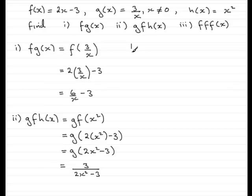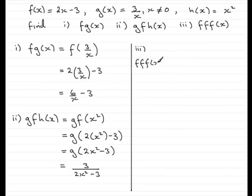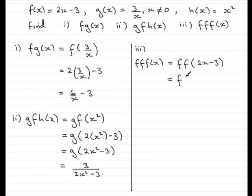In my last example, I chose this to demonstrate a repeating function: fff of x. We have ff of f of x, which is 2x minus 3. I need to find f of f of x, being f of 2x minus 3. So I replace any x with 2x minus 3, giving 2 lots of 2x minus 3, minus another 3.